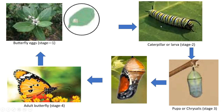Stage 2: The caterpillar. The moment it comes out it is very hungry, so it starts nibbling — it eats and eats the very leaf where it was born. After two to three days, its skin becomes very tight, so it has to shed the skin — that is, to moult. Moult means to shed the skin to give way for new growth. This eating and moulting cycle happens four times and takes about 10 to 12 days. By now, the caterpillar has grown big enough and enters Stage 3.